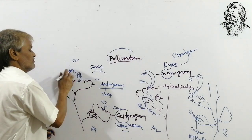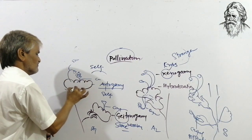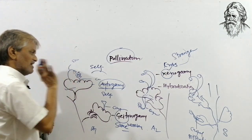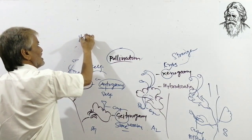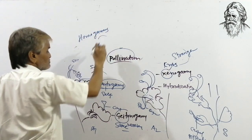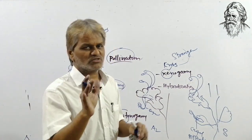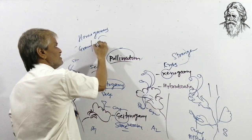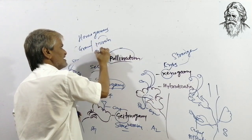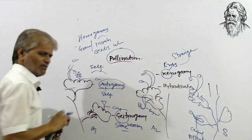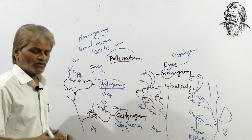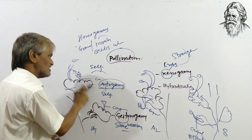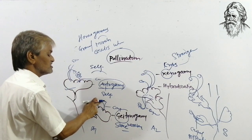Autogamy: transfer of pollen grains to the receptive stigma of the same flower is called autogamy. The flowers involved are generally bisexual and homogamous — flowers in which both reproductive organs mature at the same time.